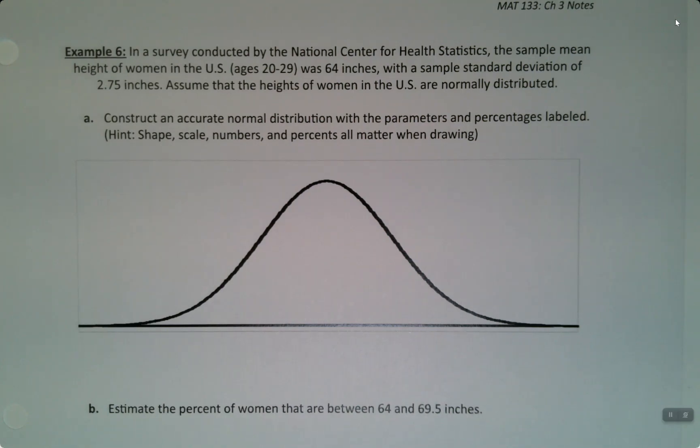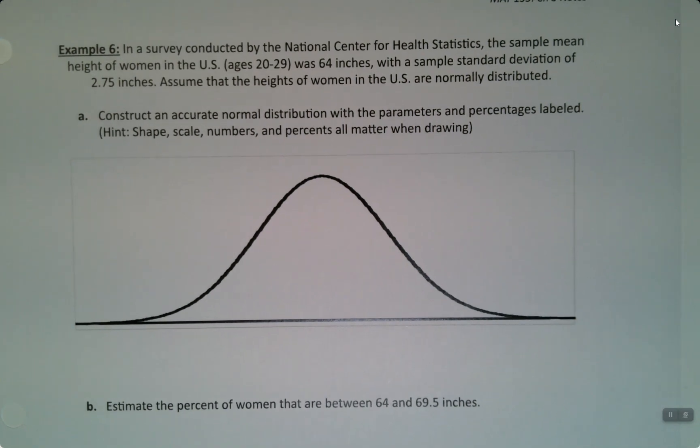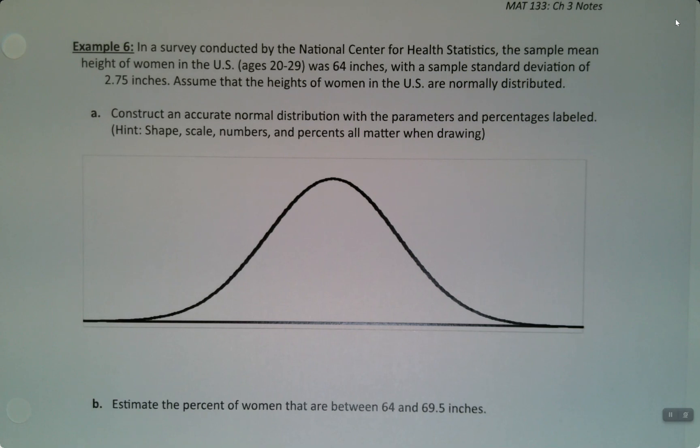So let's put this empirical rule plan into action, shall we? Because it all seems a little much until we've done a problem with it, and then I promise it's not so bad. Okay, so we have a survey conducted by the National Center for Health Statistics. The sample mean height of women in the U.S. age 20 to 29 was 64 inches with a sample standard deviation of 2.75 inches. Assume that the heights of women in the U.S. are normally distributed.